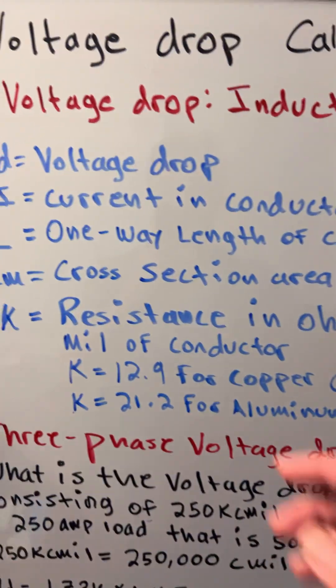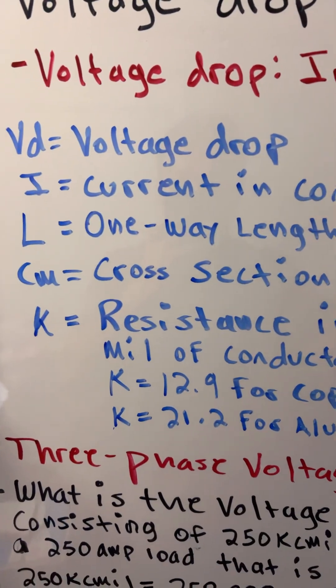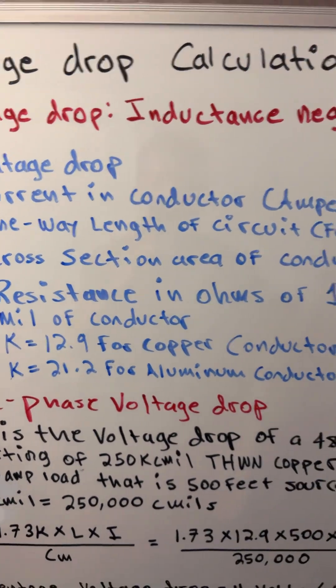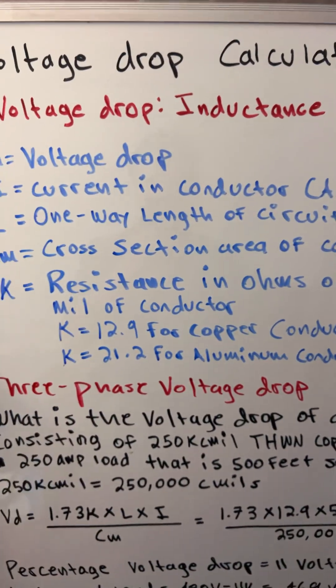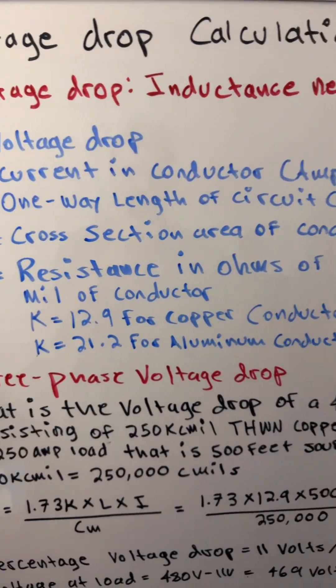So VD equals voltage drop, I is for current in conductors in amperes, L is one-way length of circuit.